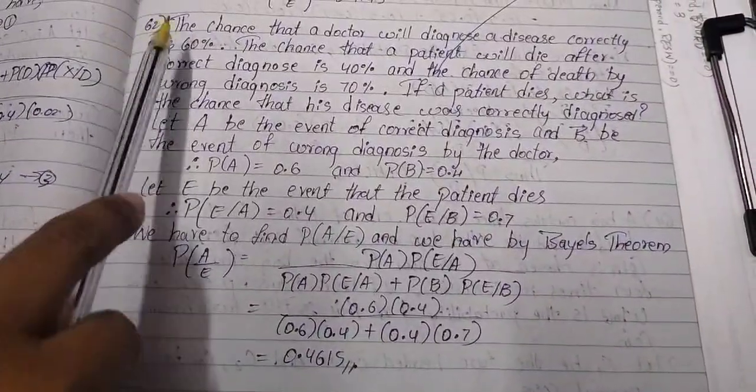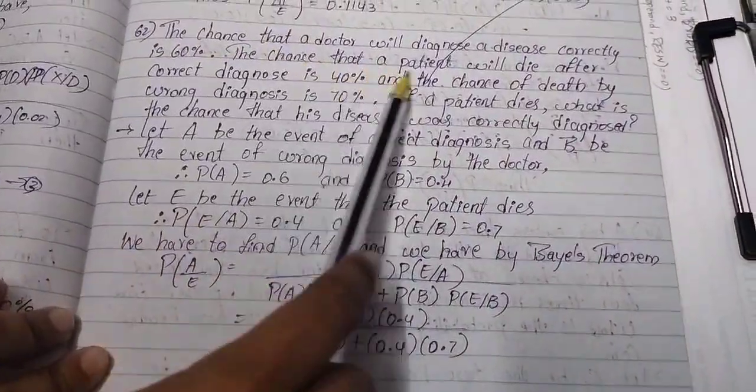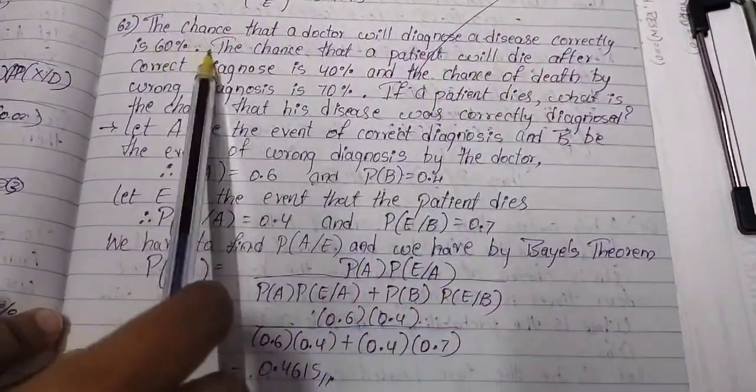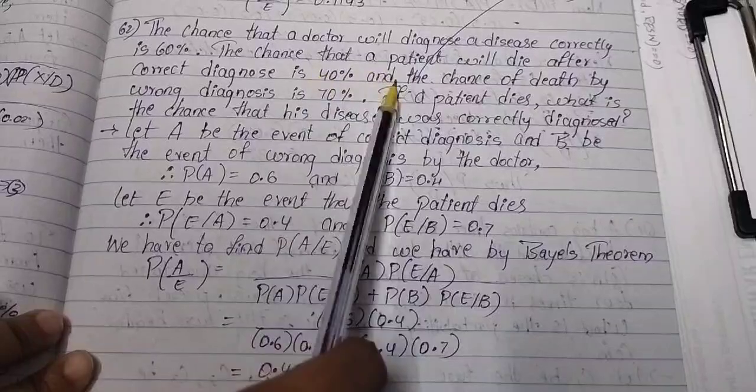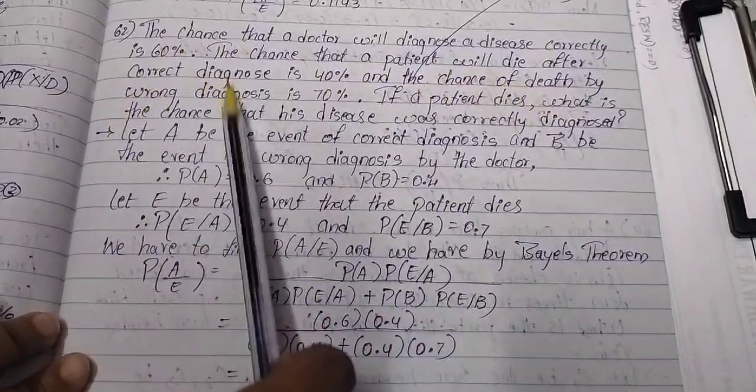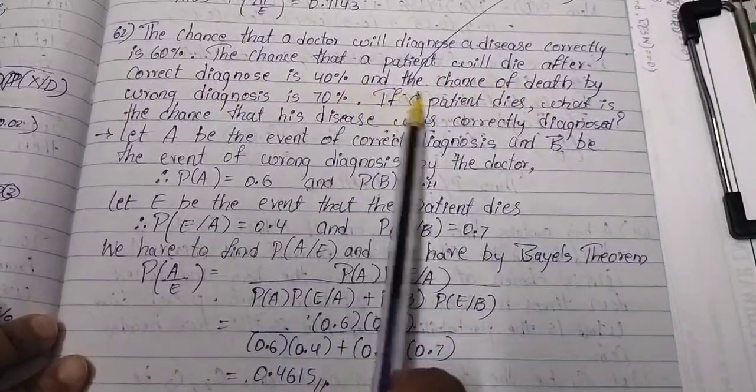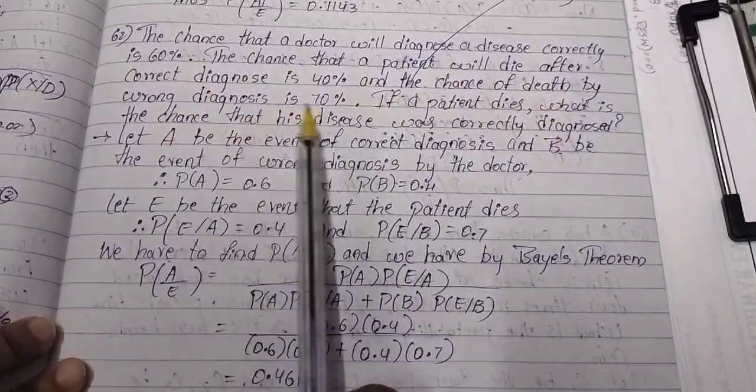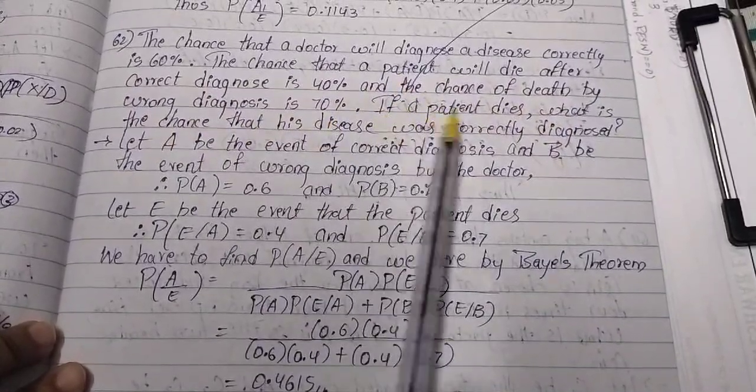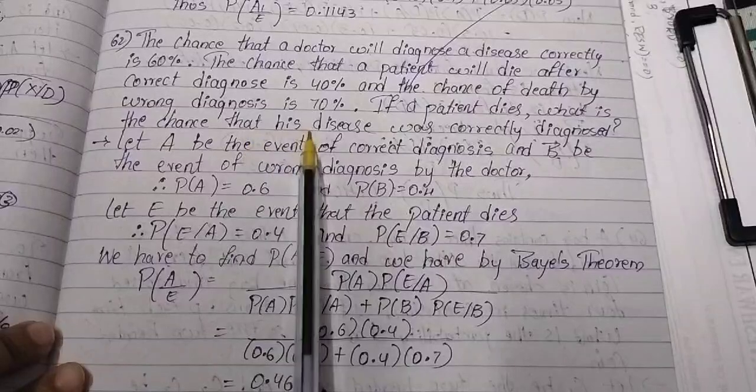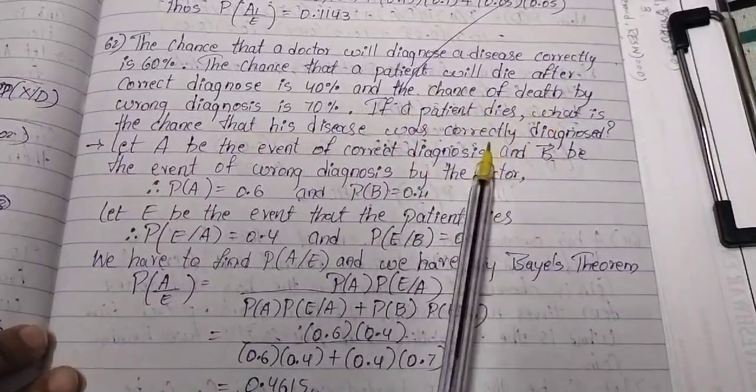Second problem: The chance that a doctor will diagnose a disease correctly is 60%. The chance that a patient will die after correct diagnosis is 40% and the chance of death by wrong diagnosis is 70%. If the patient dies,